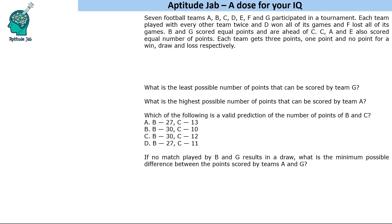There are seven football teams: A, B, C, D, E, F, G. They participated in a tournament and each team played every other team twice. D won all of its games and F lost all of its games. B and G scored equal points and are ahead of C. C, A, and E also scored an equal number of points. Each team gets three points, one point, and no point for a win, draw, and loss respectively.